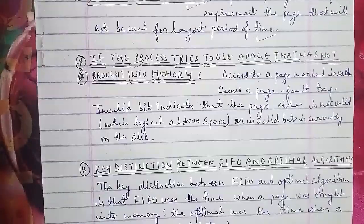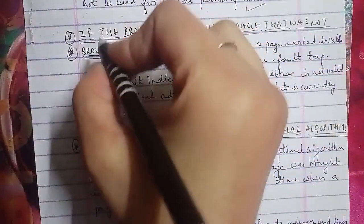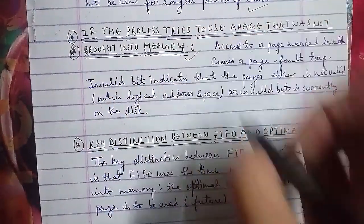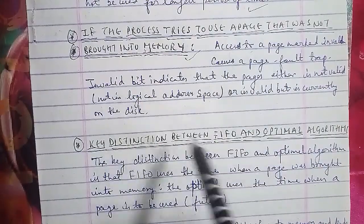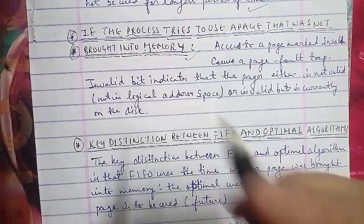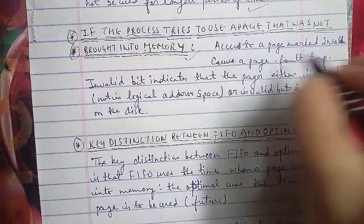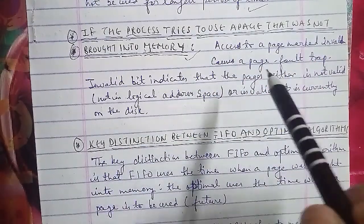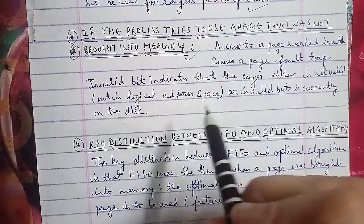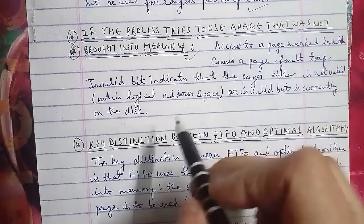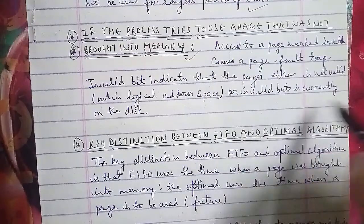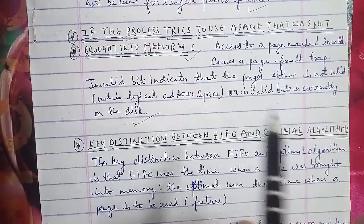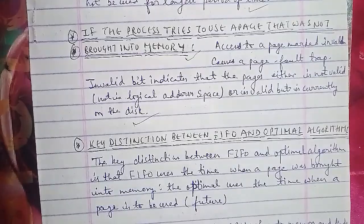If a process tries to use a page that was not brought into memory, accessing a page marked as invalid causes a page fault trap. The invalid bit indicates that the page is either not in the logical address space, or valid but currently on disk. This tells you whether your page is valid or invalid and whether it's currently in the disk or logical address space.